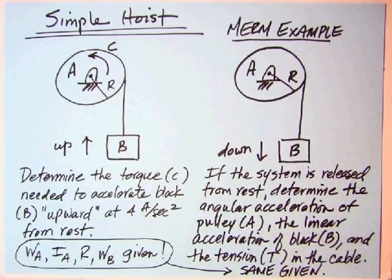The linear acceleration of block B, which is related, and though he doesn't find it, ought to find the tension T in the cable. You'd have the exact same things given, the weight of the pulley, though you don't really need it to find the kinematics, the I about A, the R, and the WB. Let's work that problem first.